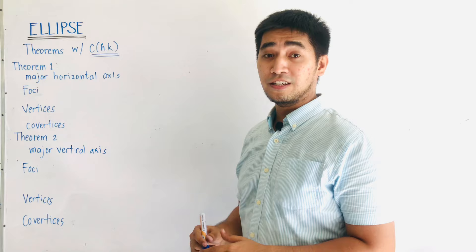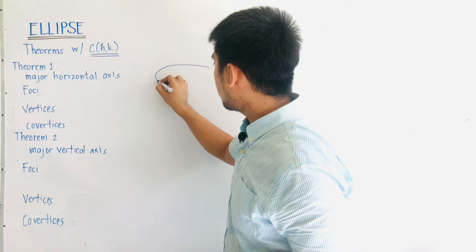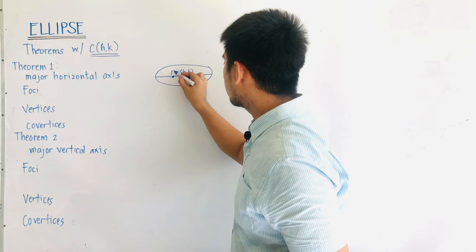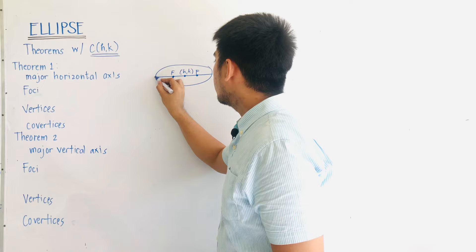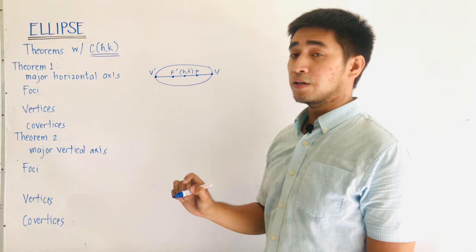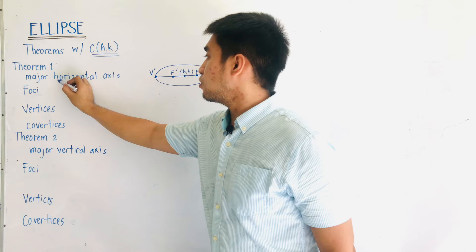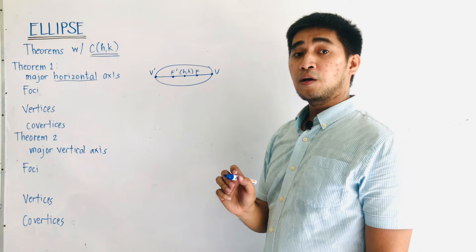For Theorem 1, we have a major horizontal axis. When we say it is a major horizontal axis, our ellipse will somehow look like this. This is the center of the ellipse located at (h, k). This is the focus, and this is the other focus — together, we call those foci. This is f prime, this is v prime, this is v — therefore, they are the vertices. The vertices and the foci lie on the same line as the major axis, therefore it is major horizontal. The vertices and foci are located at the horizontal axis.